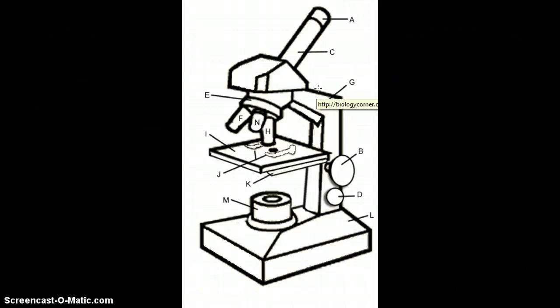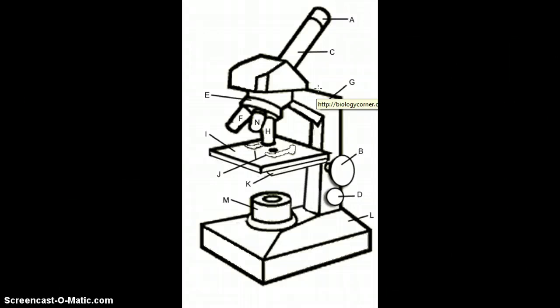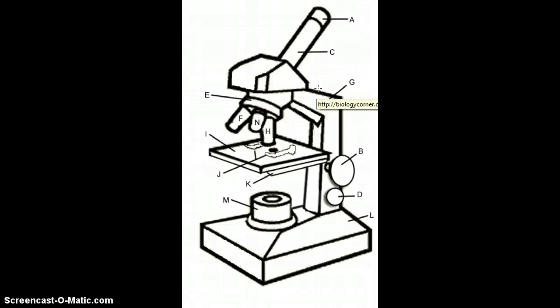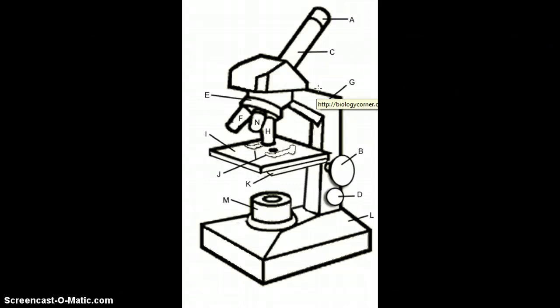The objective lens, often called objective for short. The shortest of the three objectives is a scanning power objective lens and has a power of four times. The second objective is the low power objective, which produces a magnification of ten times. The high power objective lens has a magnification of 40 times.